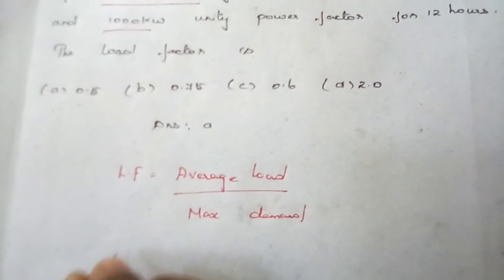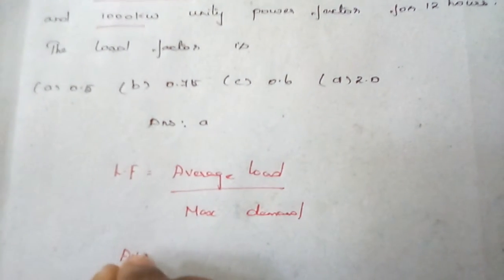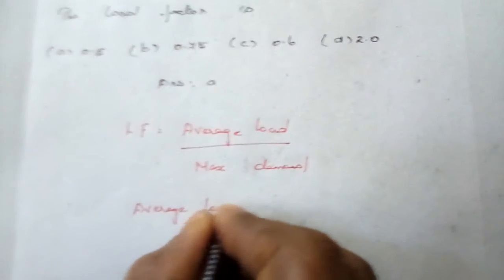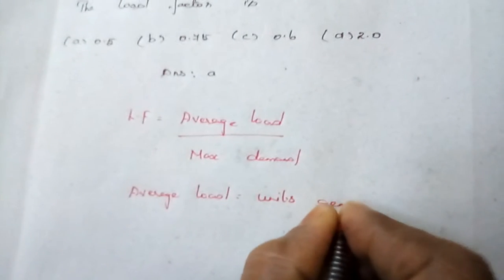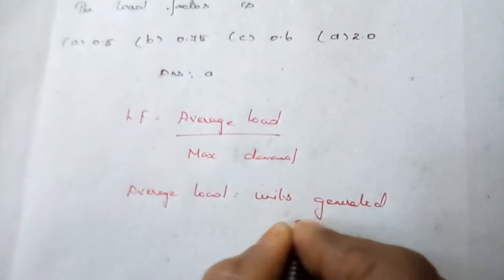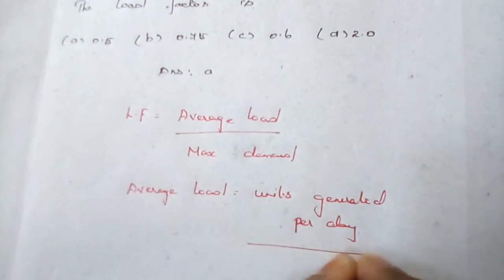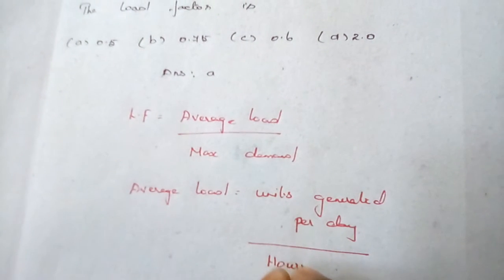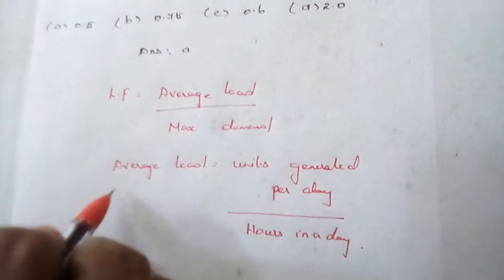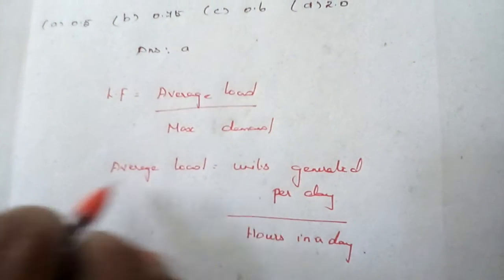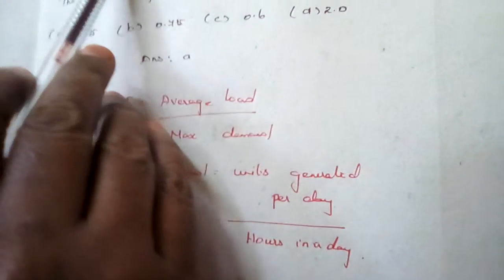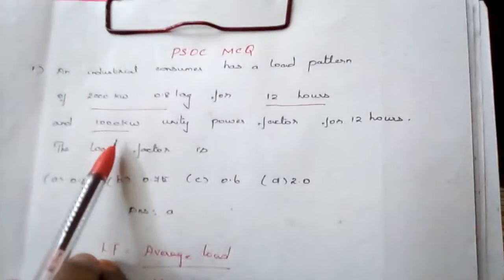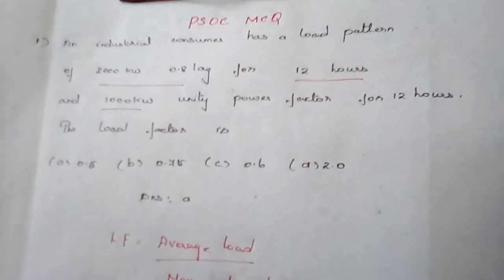The formula for finding the average load is: average load equals units generated per day divided by hours in a day. So this is the formula for finding the average load. The units generated per day are given, and a day has 24 hours.